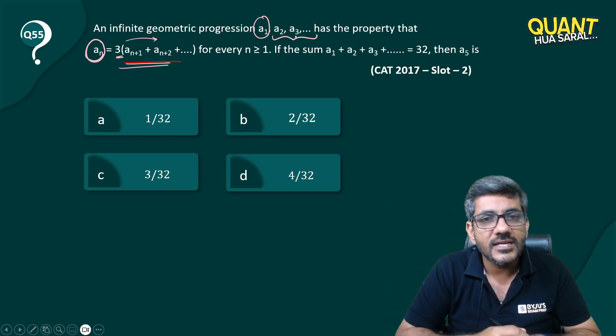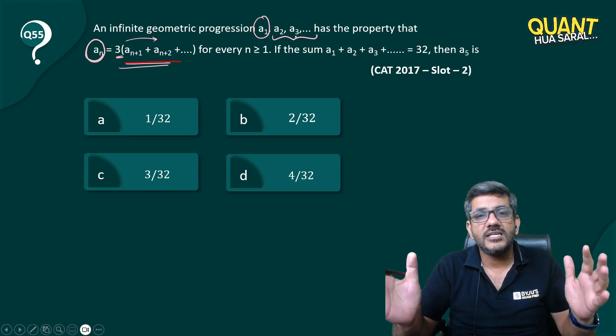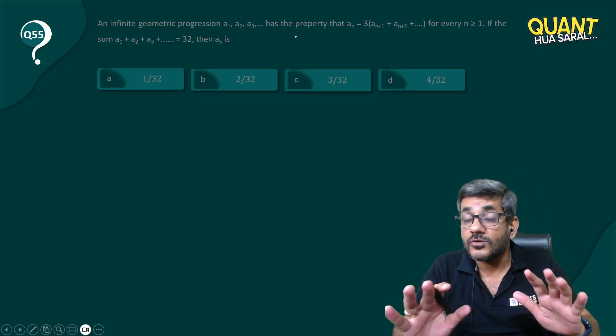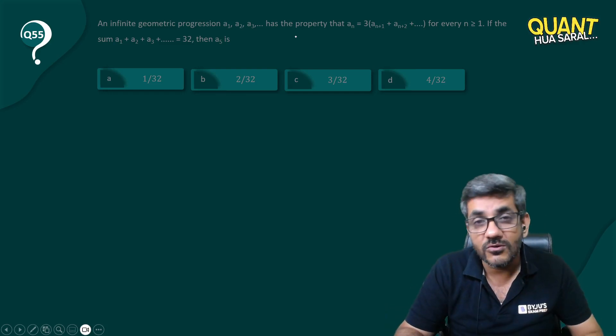That's how the question is asking you: if the total sum of the series is 32, what is a_5? Let's try to understand this and I'm of course going to give you an aptitude solution for this question.